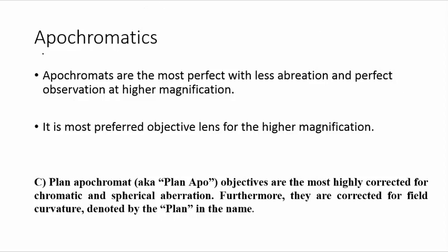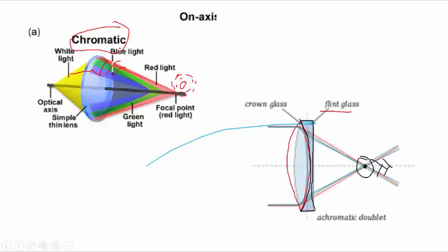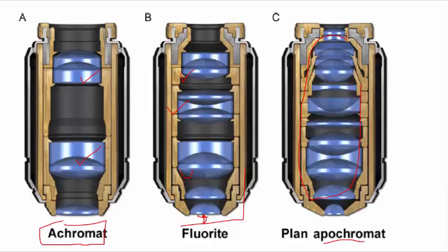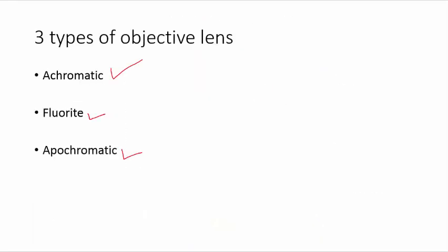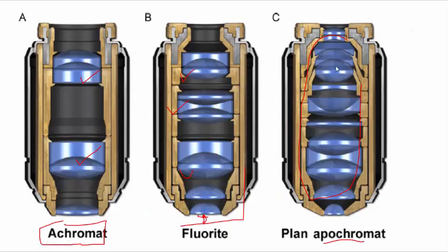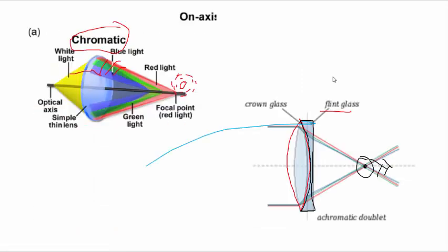The third and last type of objective lens structurally is the apochromate, which is considered the most perfect. It is considered perfect because it shows very little aberration at higher magnification. Inside the apochromate, there is the capability to eliminate both chromatic aberration and spherical aberration. Because of this, the apochromatic lens is considered very perfect. If you see the structure of the apochromatic lens, it is fitted with so many glass elements, which gives it the capacity to remove both spherical and chromatic aberration.